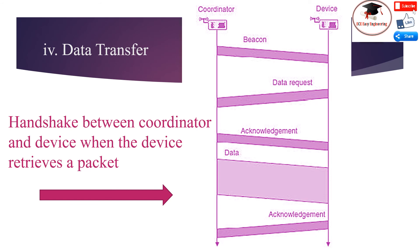Data transfer: Assume a device wants to transmit a data packet to the coordinator. If the device has an allocated transmit GTS, it wakes up just before the time slot starts and sends its packet immediately without running any carrier sense or collision avoidance operation. However, the device can do so only when the full transaction — consisting of the data packet, an immediate acknowledgement sent by the coordinator, and an appropriate inter-frame space (IFS) — fits into the allotted time slot. If this is not the case, or when the device does not have an allocated slot, it sends its data packet during the CAP using the slotted CSMA protocol. The coordinator sends an immediate acknowledgement for the packet.